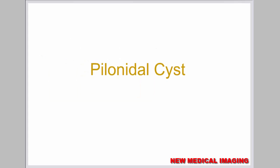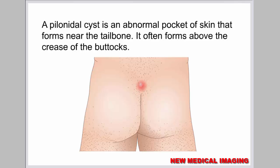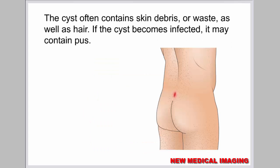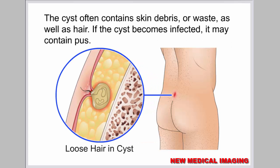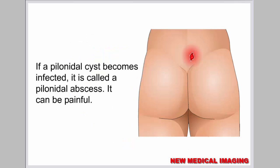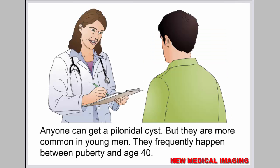A pilonidal cyst is an abnormal pocket of skin that forms near the tailbone. It often forms above the crease of the buttocks. The cyst often contains skin debris or waste as well as hair. If the cyst becomes infected, it may contain pus and is called a pilonidal abscess, which can be painful. Anyone can get a pilonidal cyst, but they are more common in young men and frequently happen between puberty and age 40.